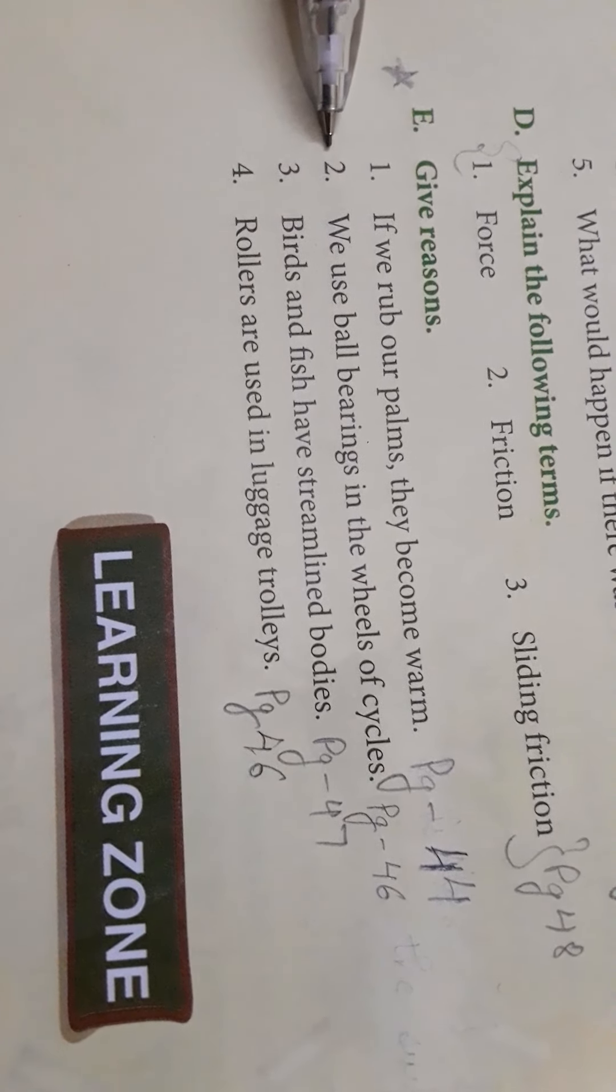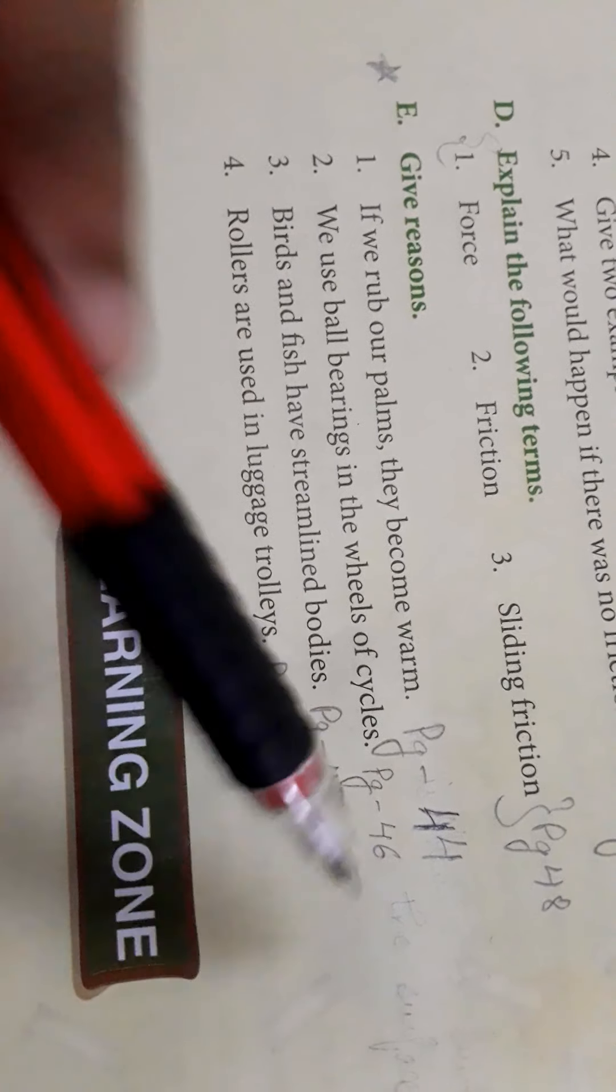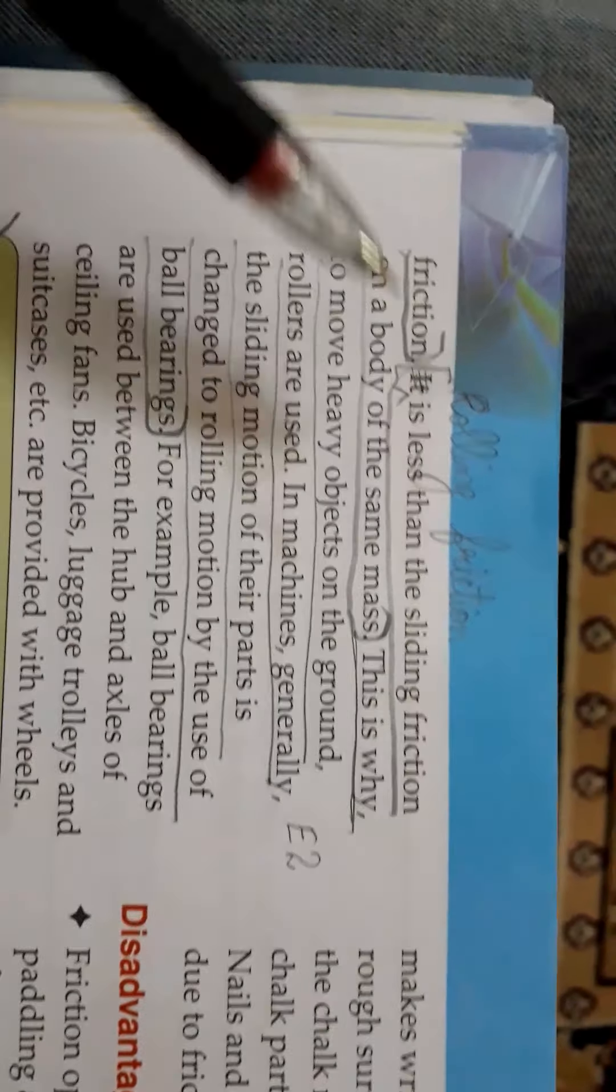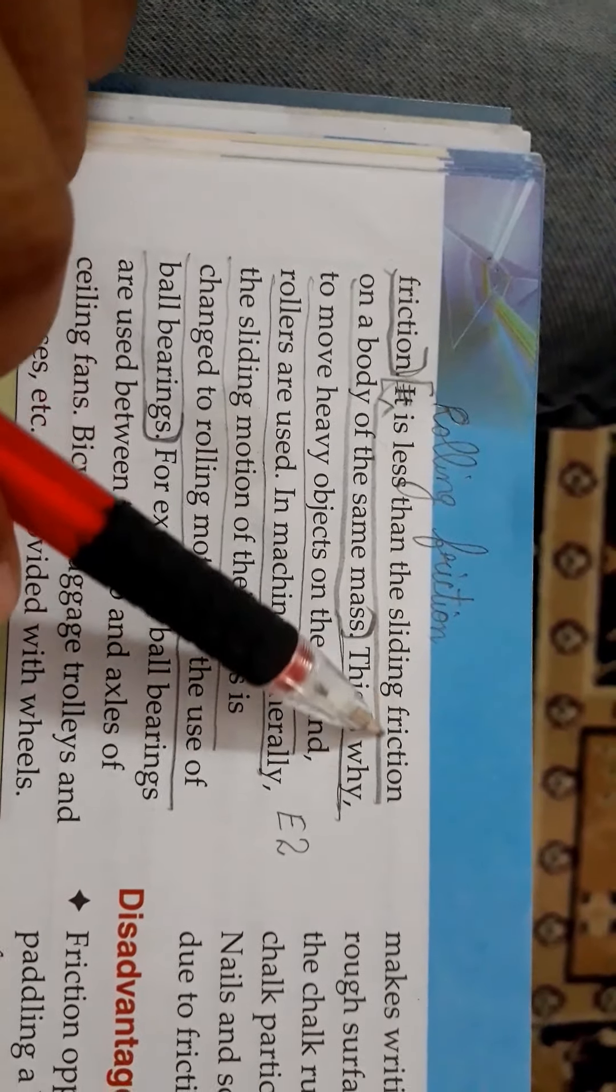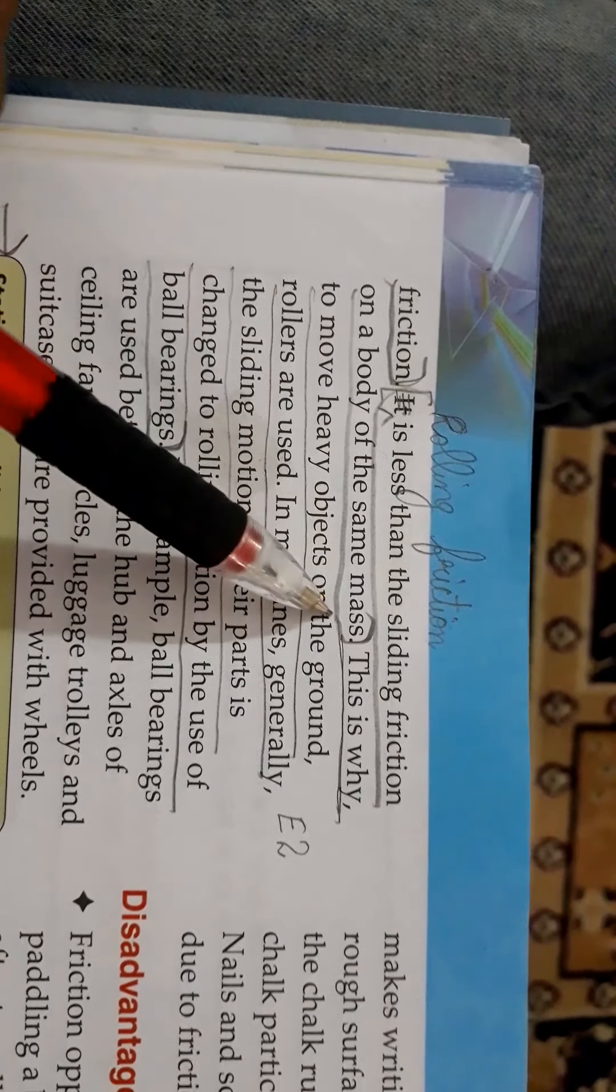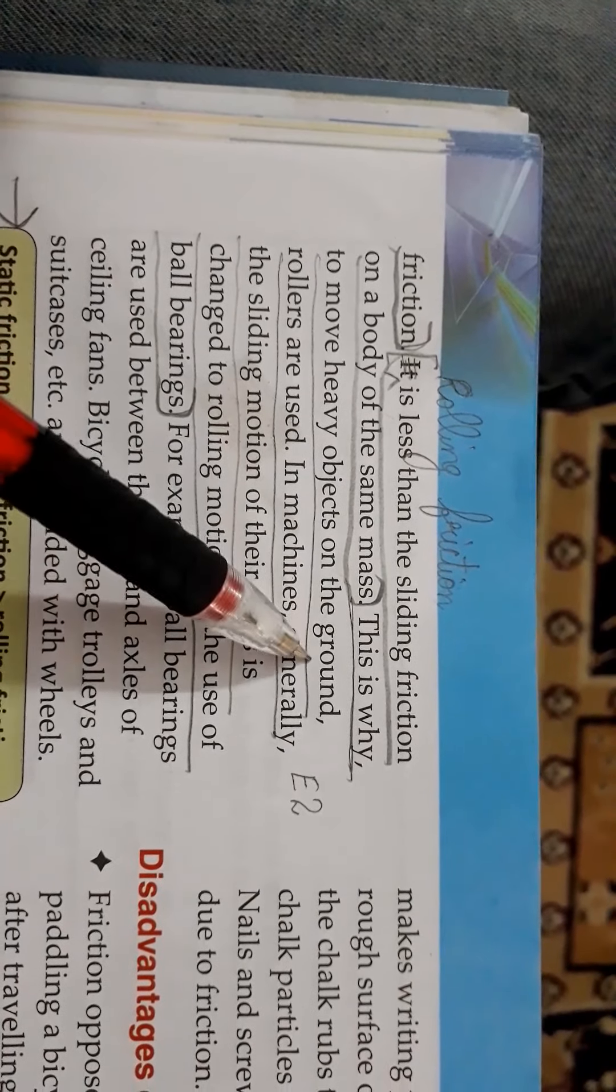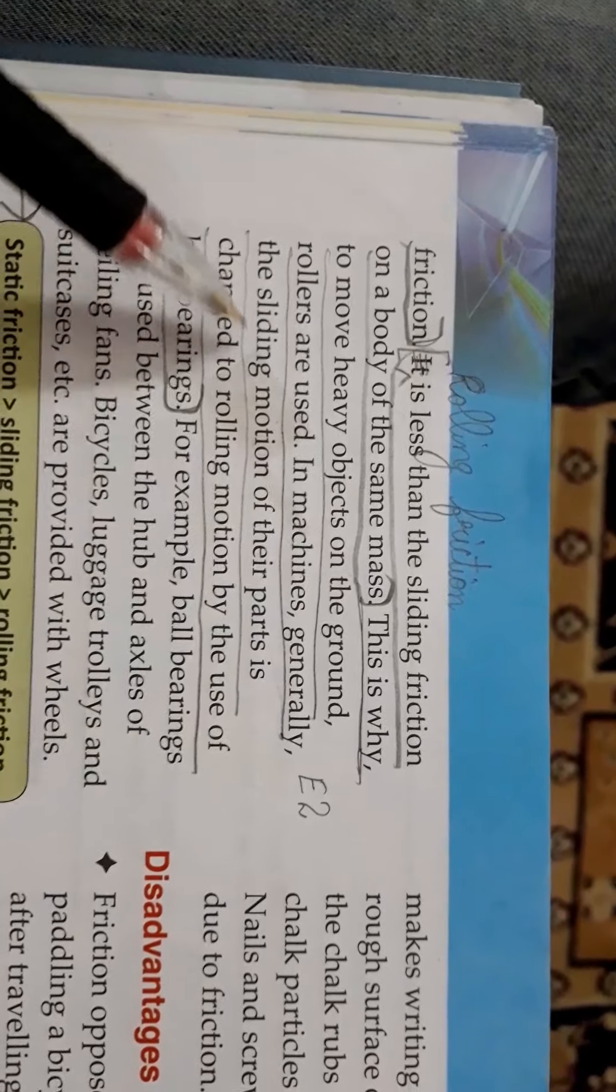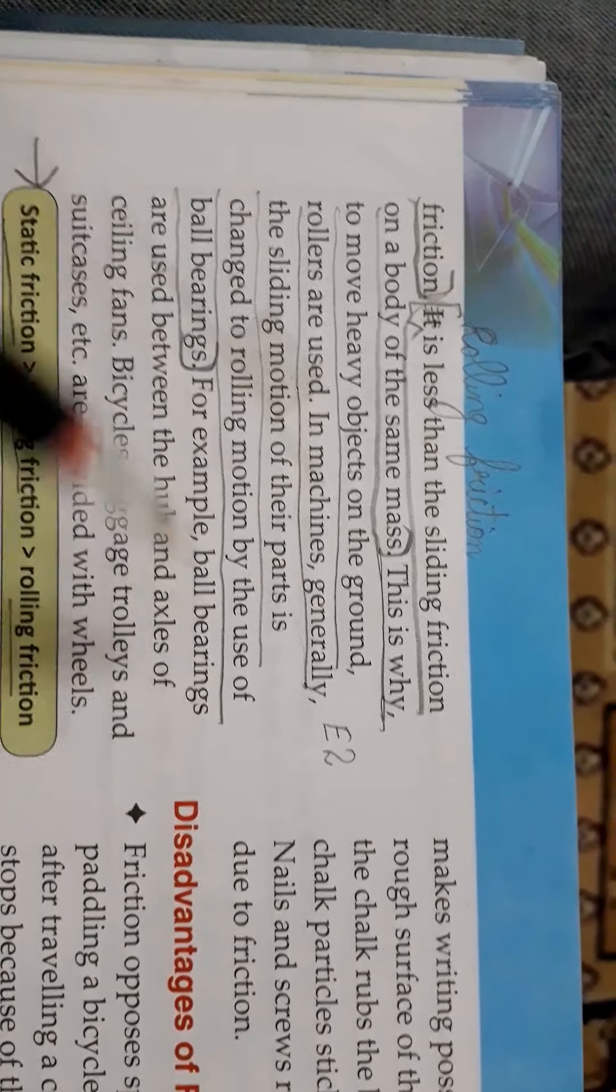The second question: we use ball bearings in the wheels of cycles, page 44. In place of it, you will cut that word and write: rolling friction is less than the sliding friction on a body of the same mass. That is why to move heavy objects on the ground, rollers are used. In machines generally, the sliding motion of parts is changed to rolling motion by use of ball bearings.